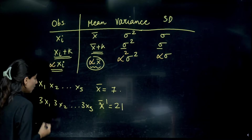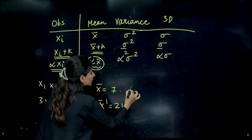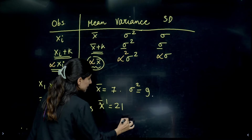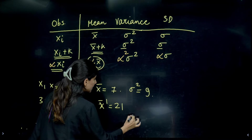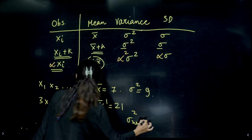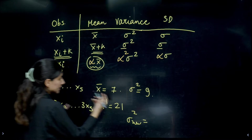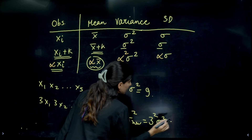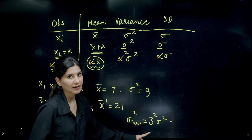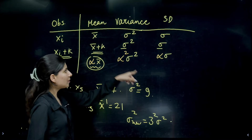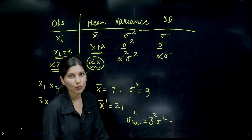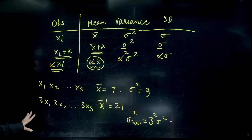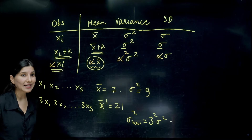For example, if original mean is 7 and variance sigma-squared is 9, and you multiply each observation by 3, the new mean becomes 3×7 = 21, and the new variance becomes 3² × 9 = 81, so standard deviation becomes 3×9... actually 3×3 = 9. That's how the table works.